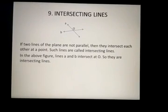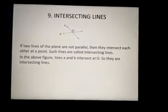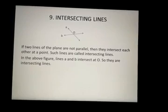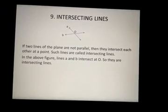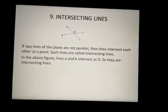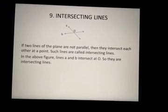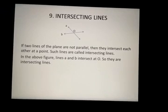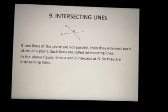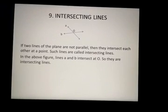Now the next concept is intersecting lines. If the lines are in the same plane, either they are parallel, and if they are not parallel, they must intersect each other at one point. Therefore, if two lines of the plane are not parallel, then they intersect each other at a point. Such lines are called intersecting lines. In the above figure, lines A and B intersect at point O, so they are intersecting lines.